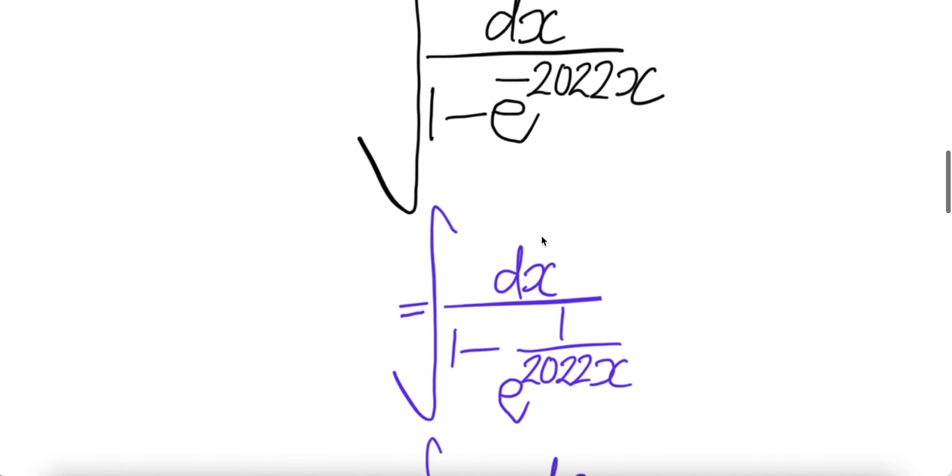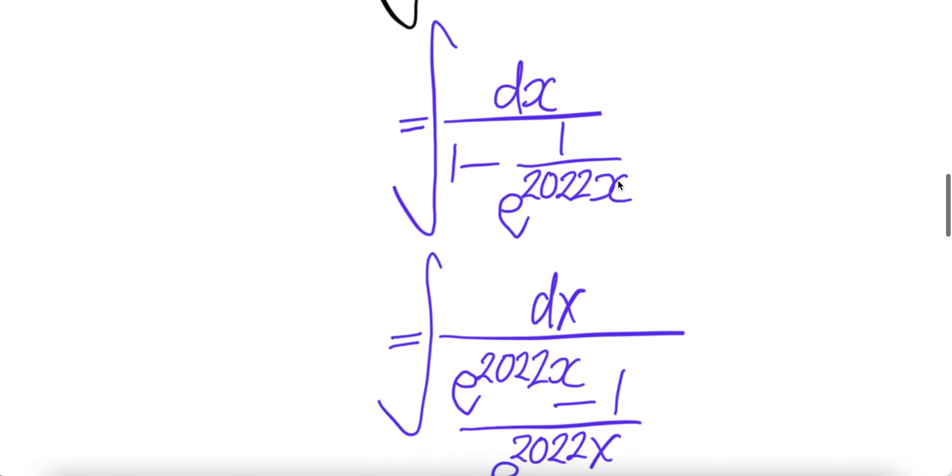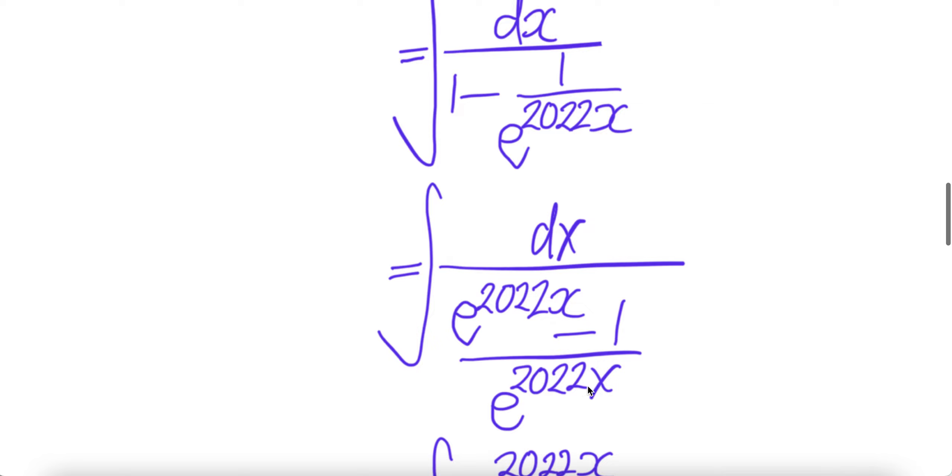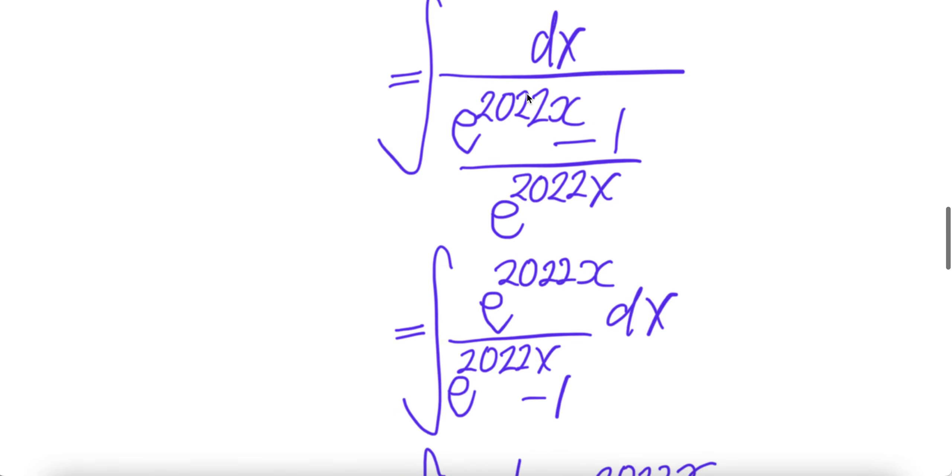Now write this as 1 over e to power of 2022x. Take common denominator will be e to power 2022x, and then e to power 2022x minus 1. This one goes upstairs here and then downstairs is the same.